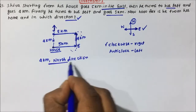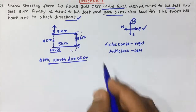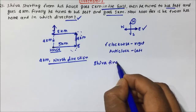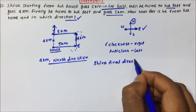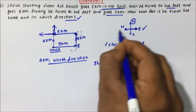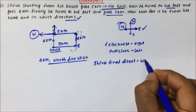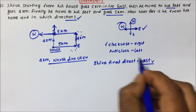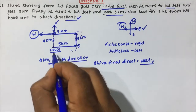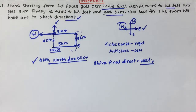One more question may be asked: what is Shiva's final direction? The final direction is the direction Shiva is facing at the end, which is west. So Shiva's final direction will be west. But with respect to his house, Shiva is in the north direction and 4 kilometers away. So our answer will be 4 kilometers, north direction.